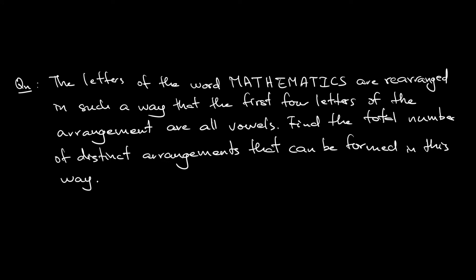The question says that the letters of the word MATHEMATICS are rearranged in such a way that the first four letters of the arrangement are all vowels. In the word mathematics, it also happens to have A, E, A, and I - four vowels. These four vowels all come to the front. Find the total number of distinct arrangements that can be formed in this way.